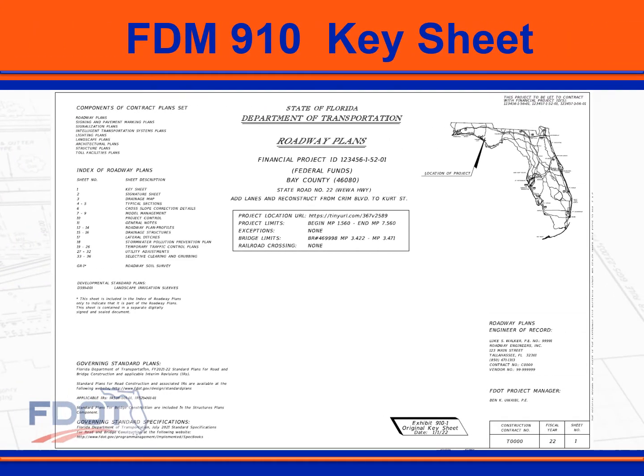The new FDM 910 chapter is mostly unchanged from FDM 302 and 303, but there are three new requirements. First, in the center of the page where it used to say contract plans, will now state roadway plans.